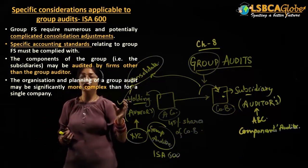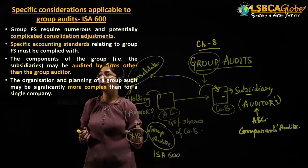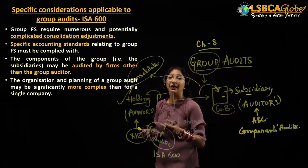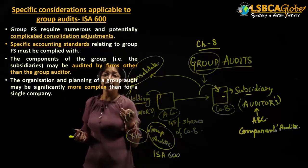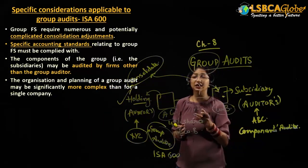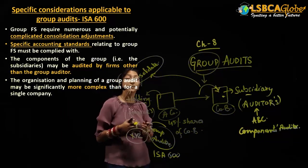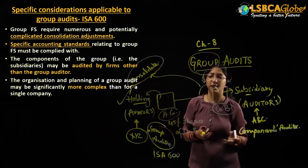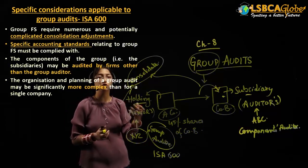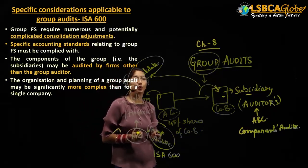So these are the basic specific considerations applicable only in the case of group audits and not in the case of a normal single company audit: consolidation adjustments, specific accounting standards applicable only in the case of group audits, the possibility that the subsidiary may be audited by another firm, and the extra complexity in preparing the audit plan. That is why the audit plan of a group company may be more complex than that of a normal company. I hope everyone understood what those specific considerations are that you have to keep in mind before accepting a group audit.